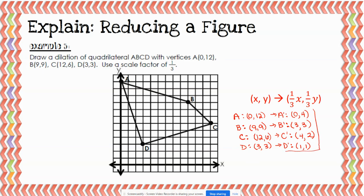Now we just need to graph these points. A prime is at (0, 4) — don't move left or right, move up four. B prime is at (3, 3) — move right three and up three. C prime is at (4, 2) — move right four and up two. D prime is at (1, 1) — move right one and up one. Connect the points and you see another quadrilateral. It is similar to the first one but definitely not congruent because its size has been reduced.